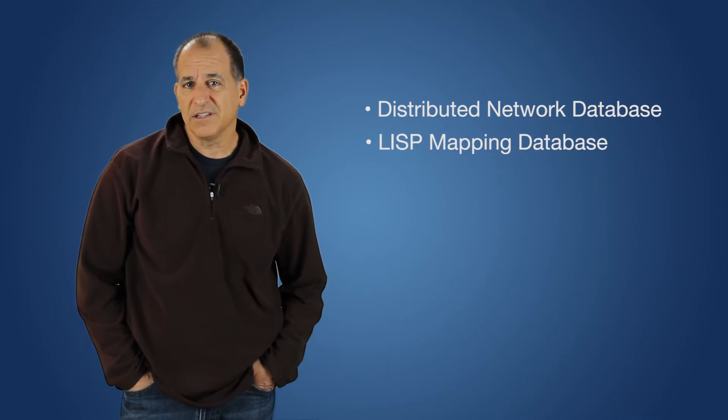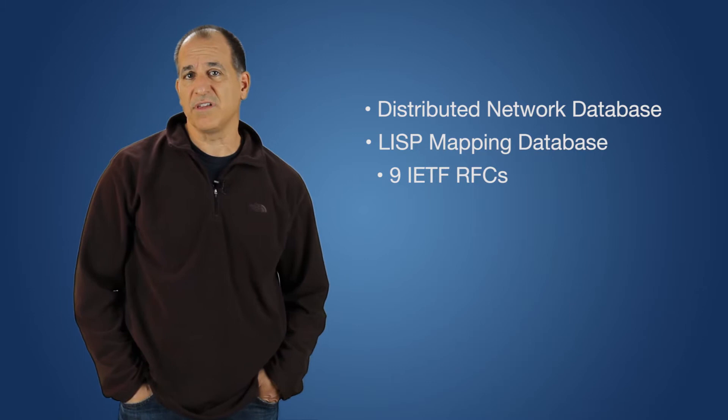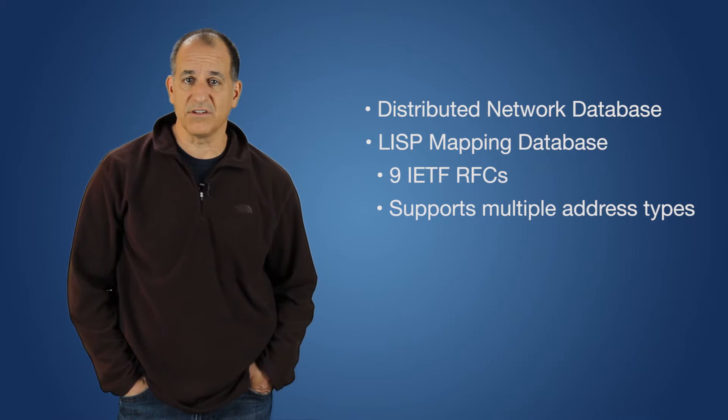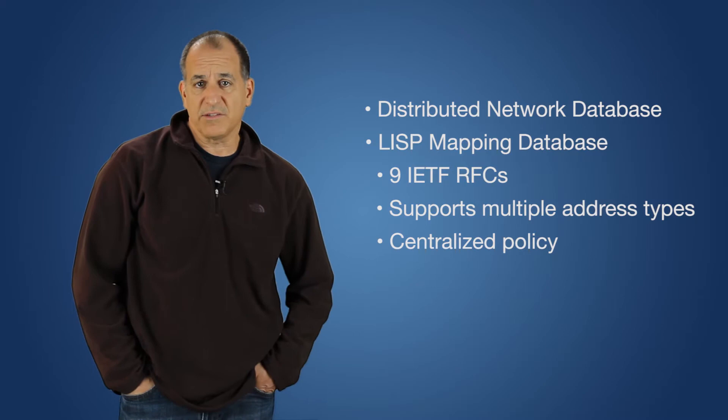LISP is the Locator ID Separation Protocol. It has been a technology in the IETF since 2009, and we have nine IETF RFCs published. What the LISP mapping database can do for you is hold multiple types of addresses at the same time. A single instance of the control plane would run to support those multiple addresses. We can get centralized policy and access control, and it can give you openness and programmability. This is truly an open standard with specifications that people can implement to.